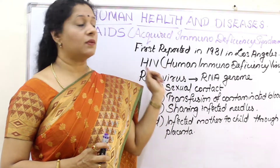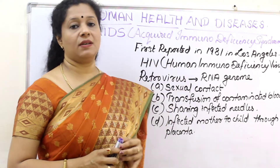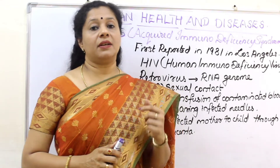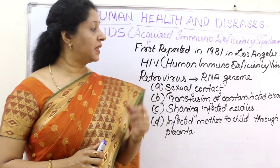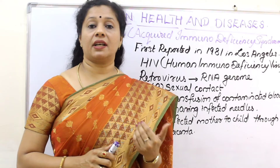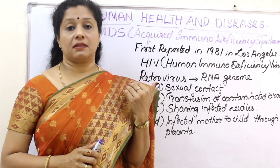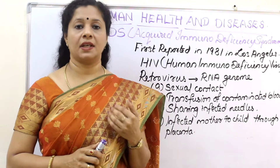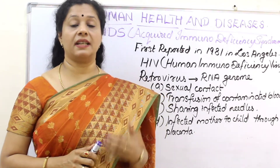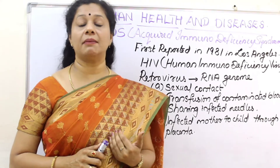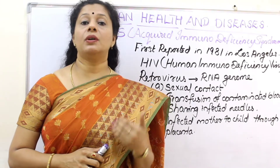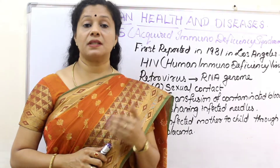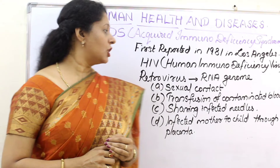AIDS was first reported in 1981 in Los Angeles in a homosexual man. And in India, it was first reported in Chennai. Initially we thought it would create a lot of havoc among populated countries like India or in continents like Africa. Since we took a lot of awareness measures at the governmental level and by non-governmental organizations, we could create awareness among people and reduce the occurrence of this disease.